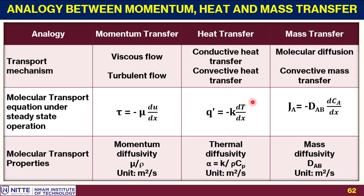For mass transfer, you have Fick's first law of molecular diffusion. The molecular properties are defined as momentum diffusivity, thermal diffusivity, and mass diffusivity. For mass transfer it is D_AB; for heat transfer it is k/(ρ·Cp); and for momentum transfer it is μ/ρ, which is called kinematic viscosity. All three have the same unit of meter squared per second.